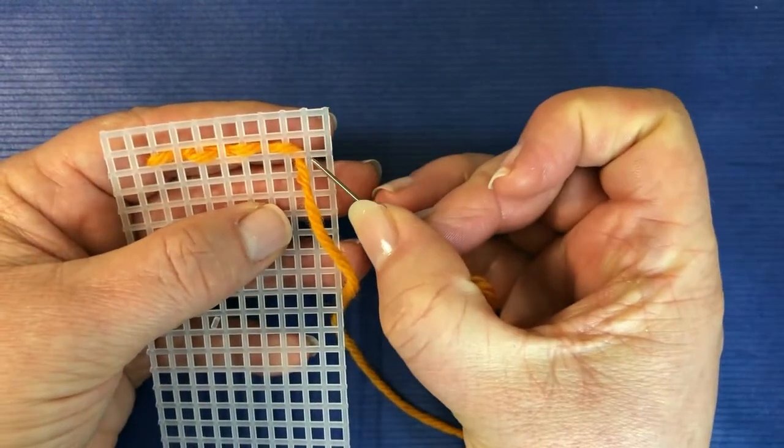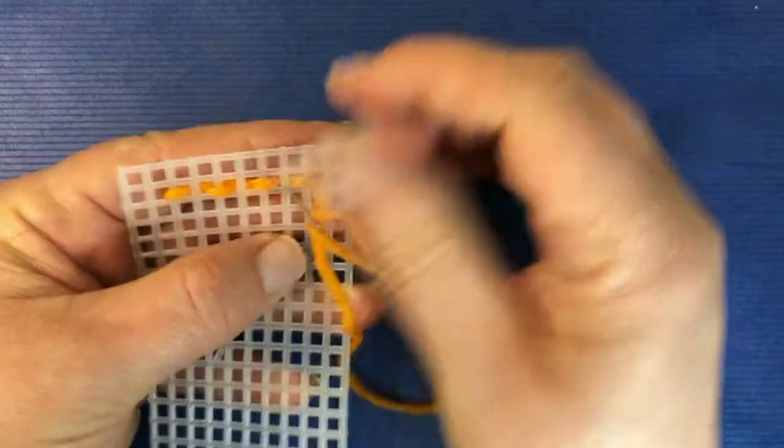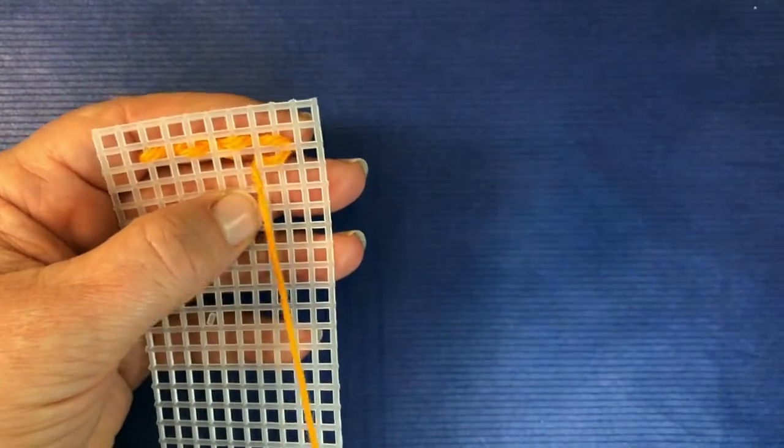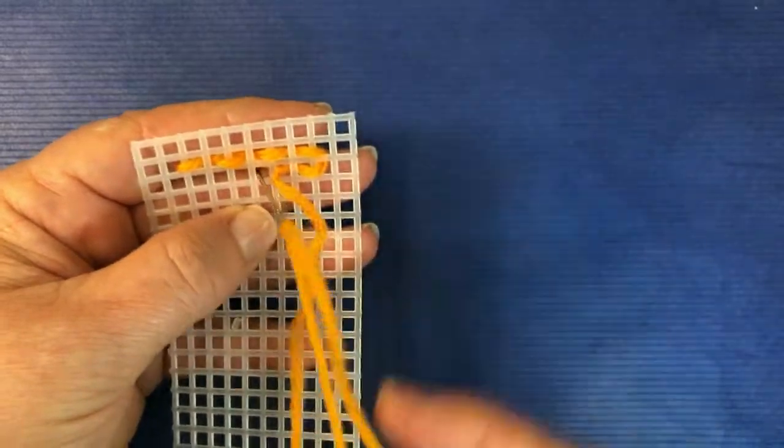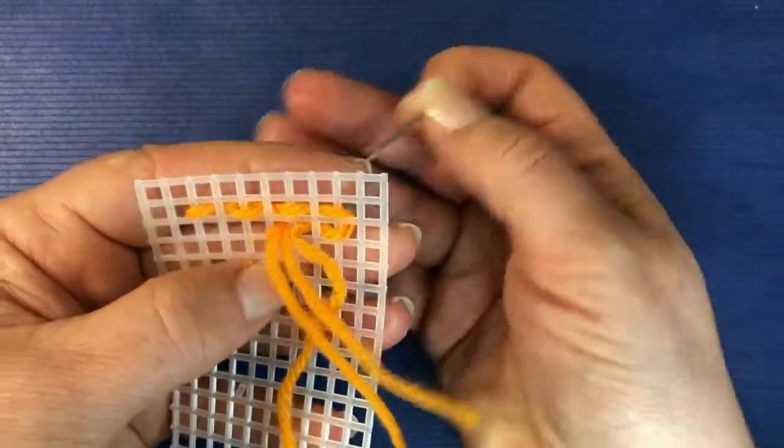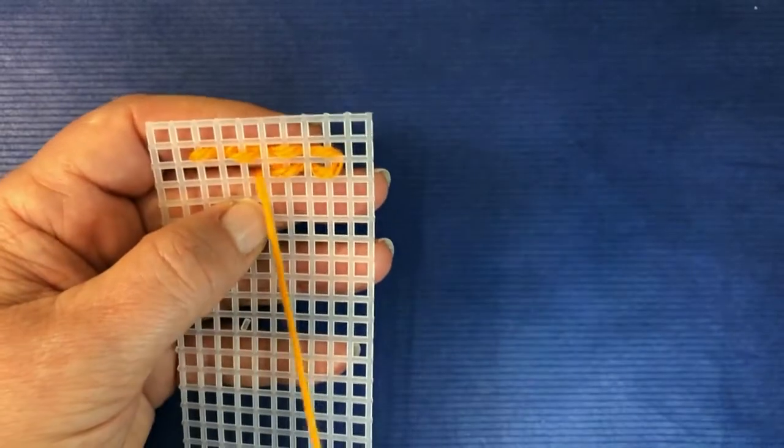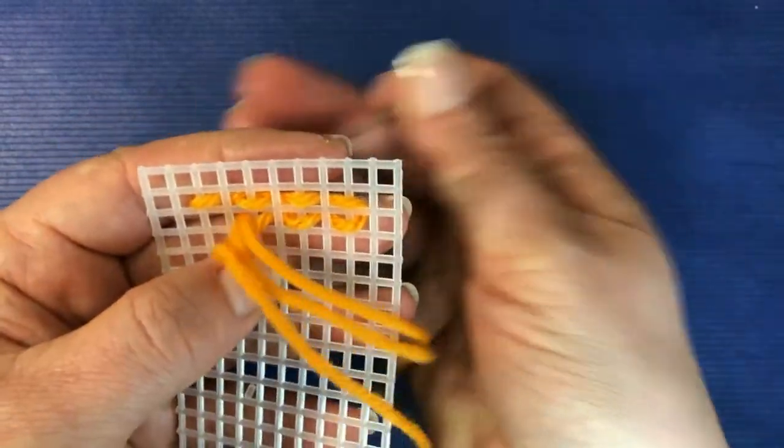So we're going from right to left. We're using a large size canvas so that you can see the stitches clearly, but this stitch looks fantastic on smaller count canvas. Come through all the way along.